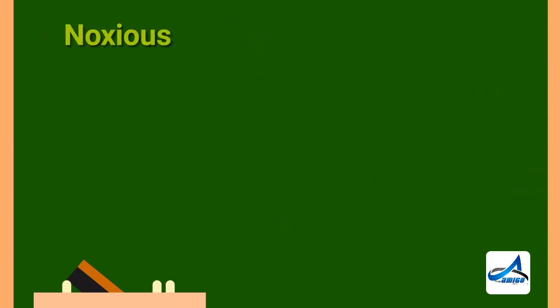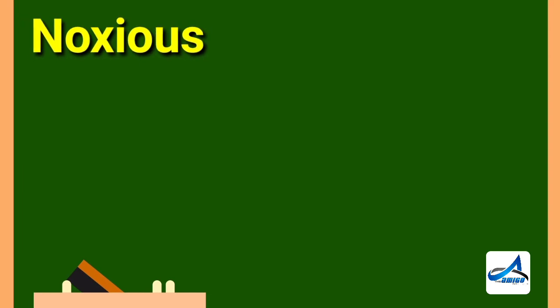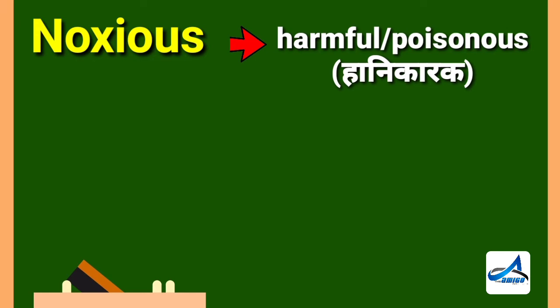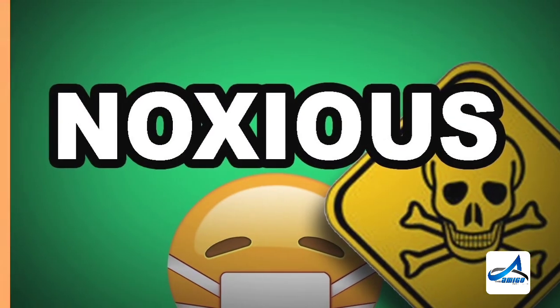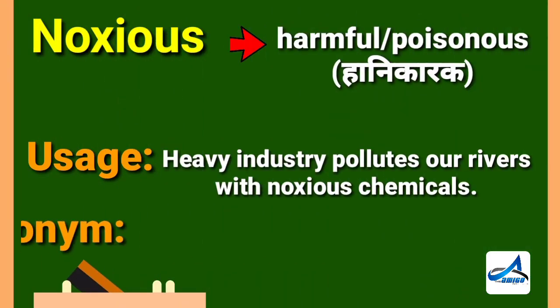The next word is noxious. Noxious means harmful or poisonous. Its Hindi meaning is 'hanikarak.' Now look at its sentence: heavy industry pollutes our rivers with noxious chemicals. Its synonym is dangerous.